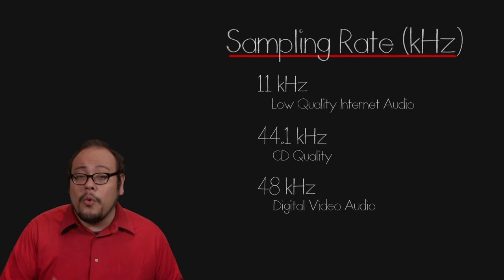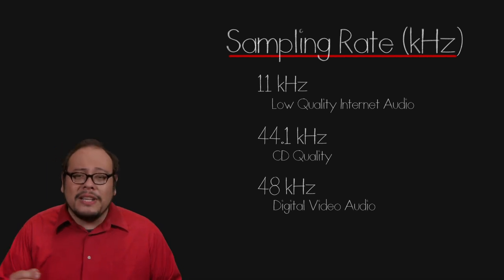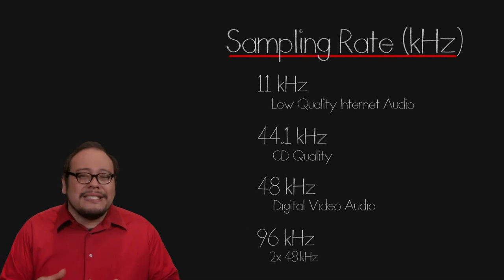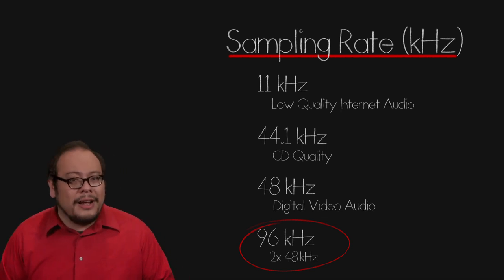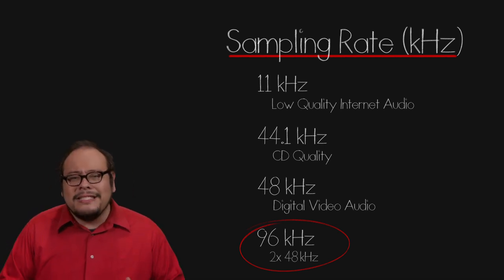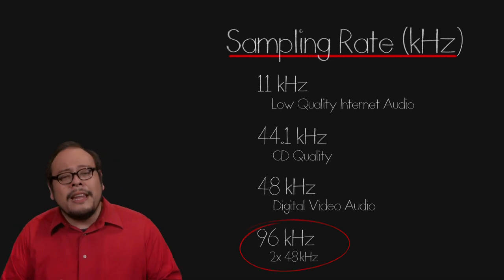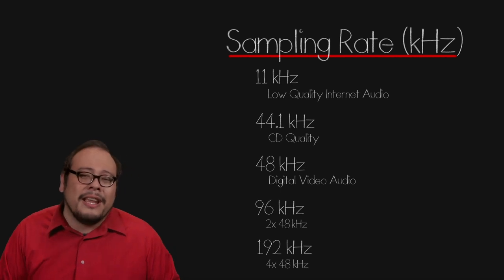48 kHz was chosen because it could deliver 22 kHz frequency response and work with 29.97 fps NTSC video as well as 25, 30, and 24 frames per second systems. But I really like to record audio at 96 kHz — that's twice the sampling rate of 48 kHz, and to me that extra resolution just sounds better. There's something translucent about 96 kHz that 48 just doesn't have. Having extra resolution also makes post-processing easier. Dedicated audio recorders can record up to 192 kHz — four times the standard — but to my ears, that's overkill.